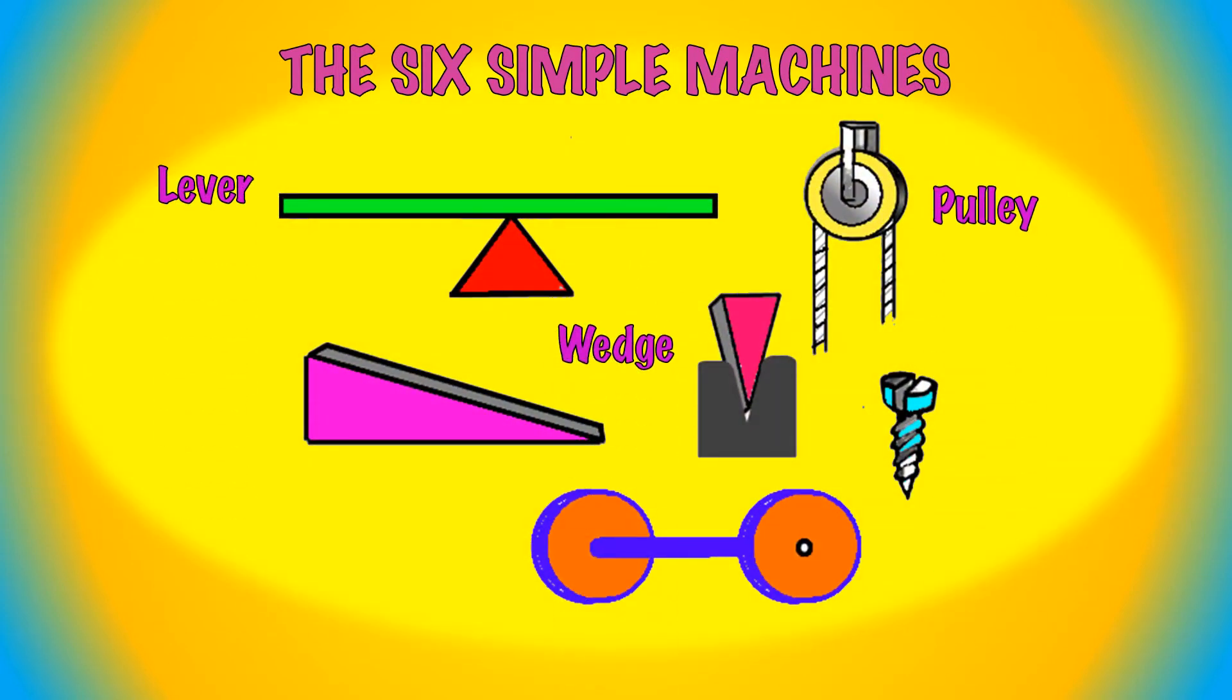There are six simple machines. These are the lever, the pulley, the inclined plane, the wedge, the screw, and the wheel and axle.